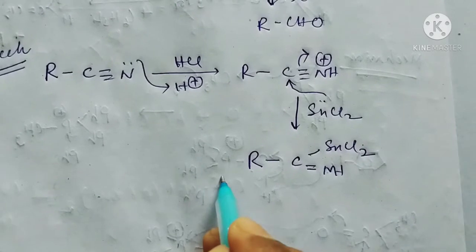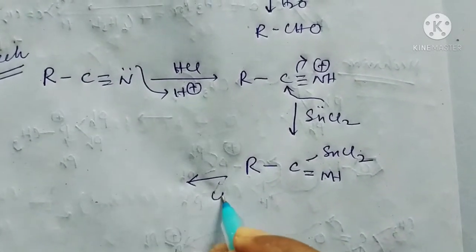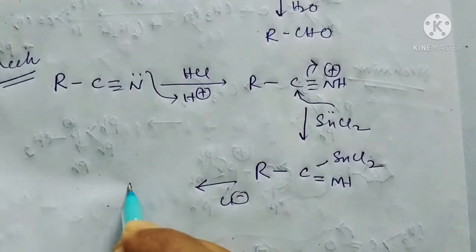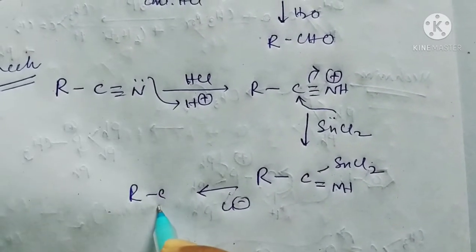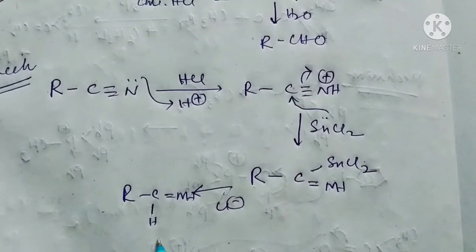Now after that, in presence of chlorides, it converts into this compound. This is our imine compound. This is imine.